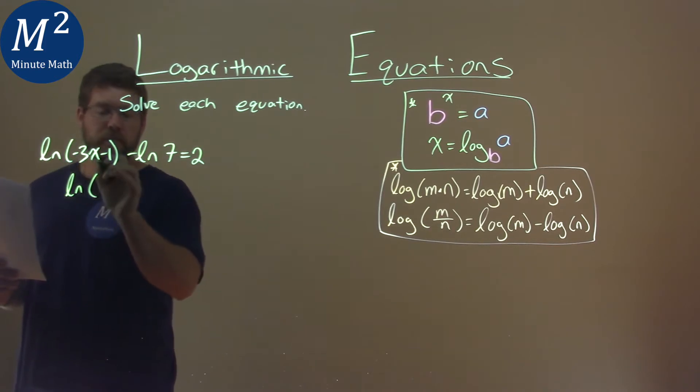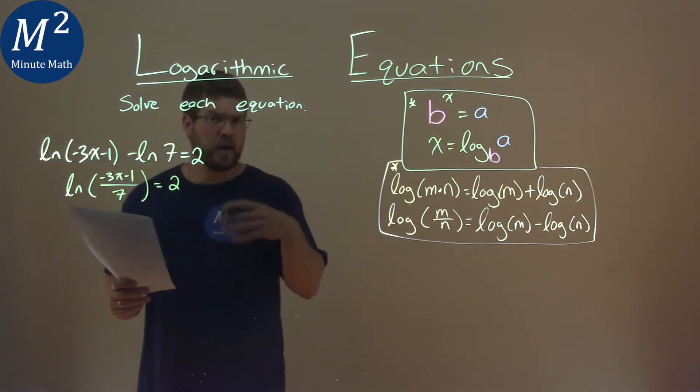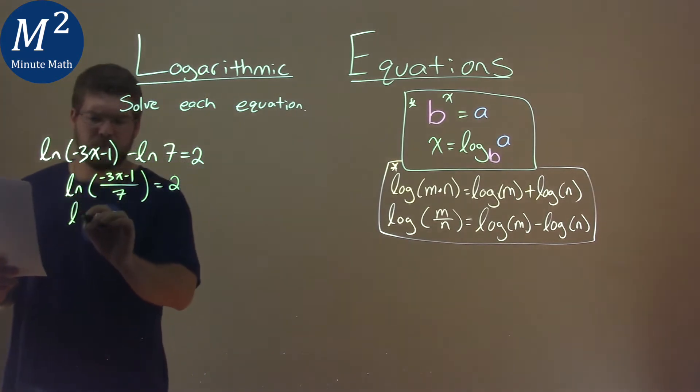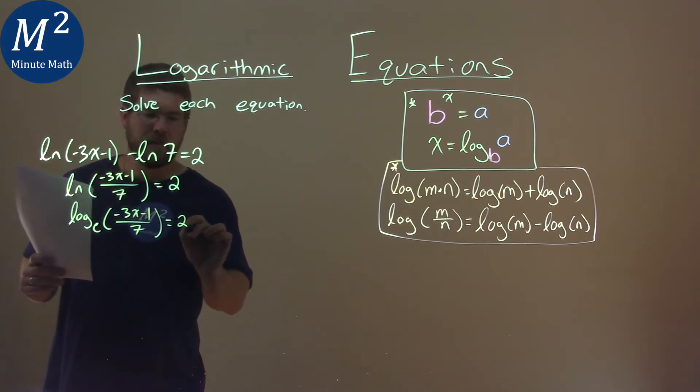Natural log of negative 3x minus 1 divided by that 7 now is equal to 2. And remember when I said natural log is log base e? Let's see that. Log base e of negative 3x minus 1 over 7, and that's equal to 2.